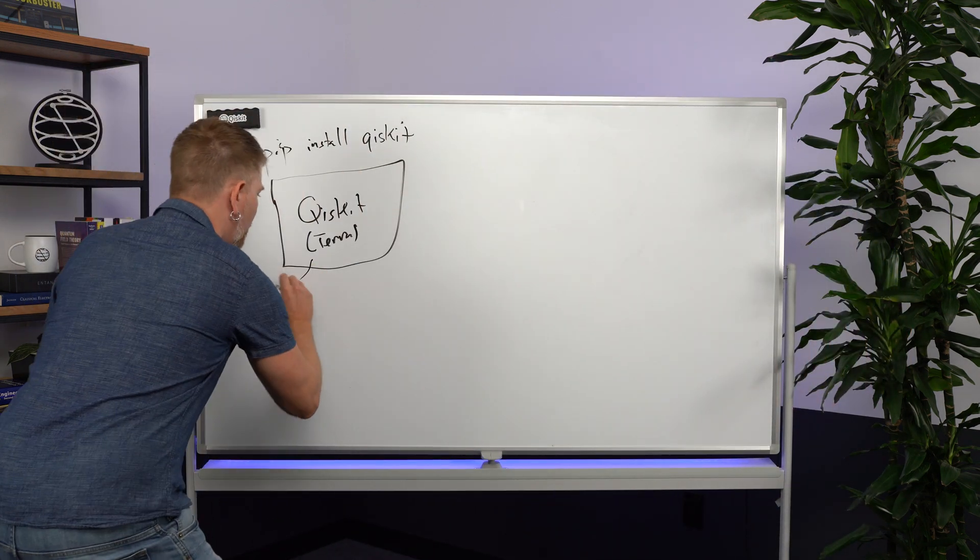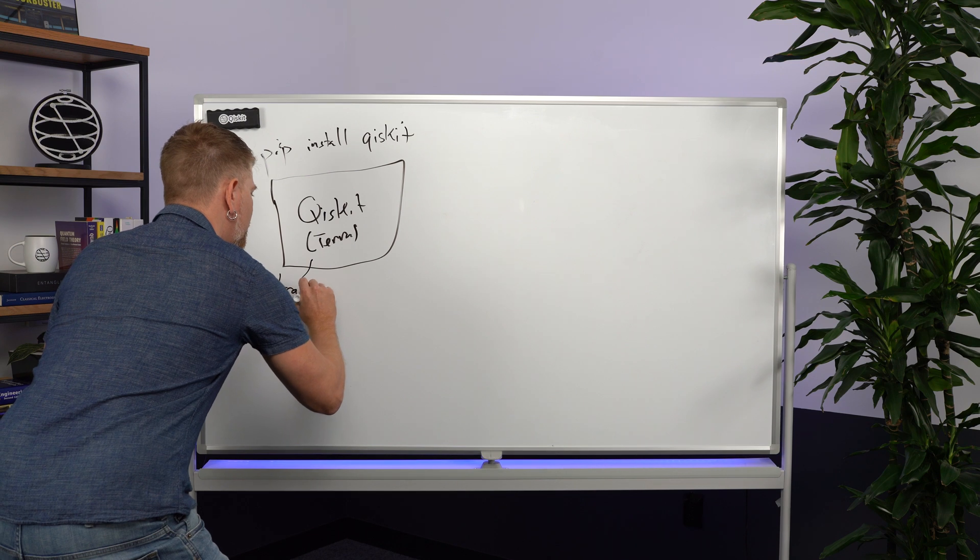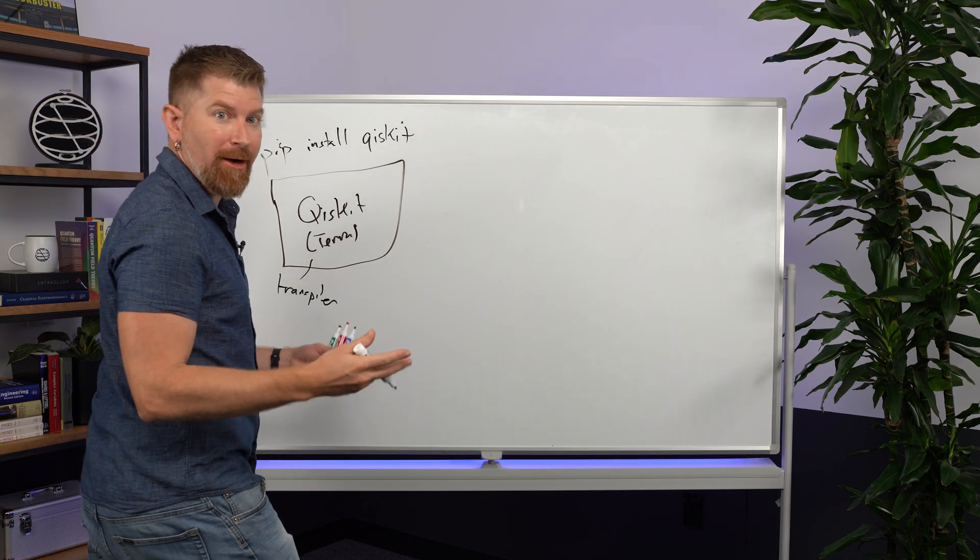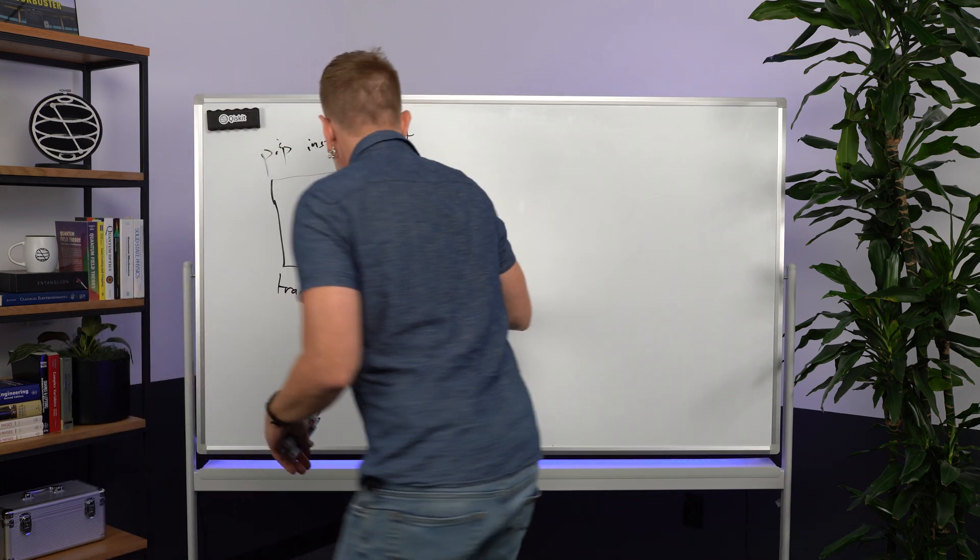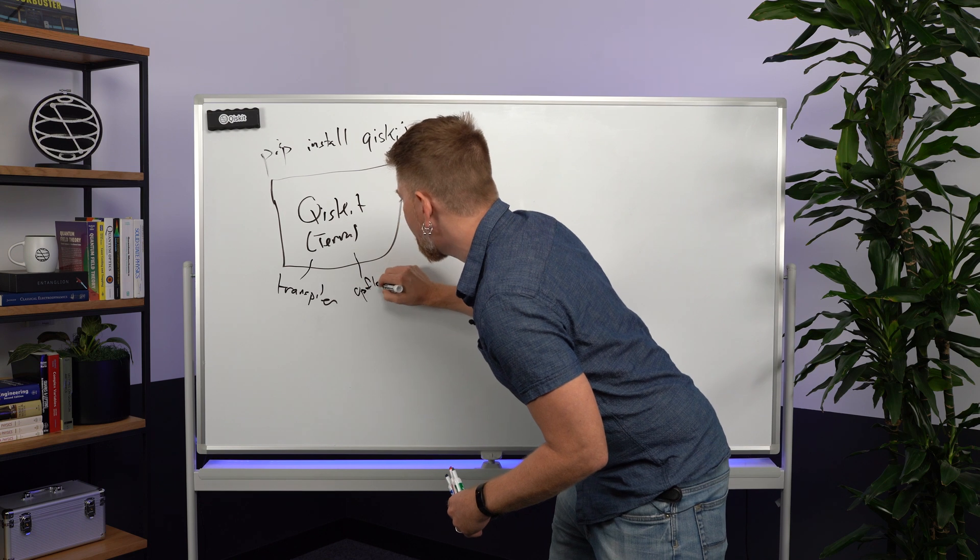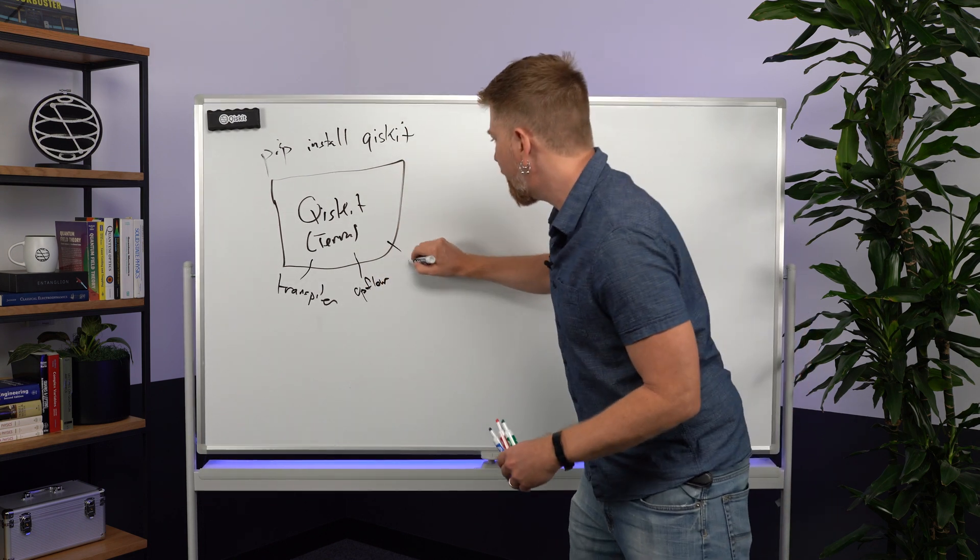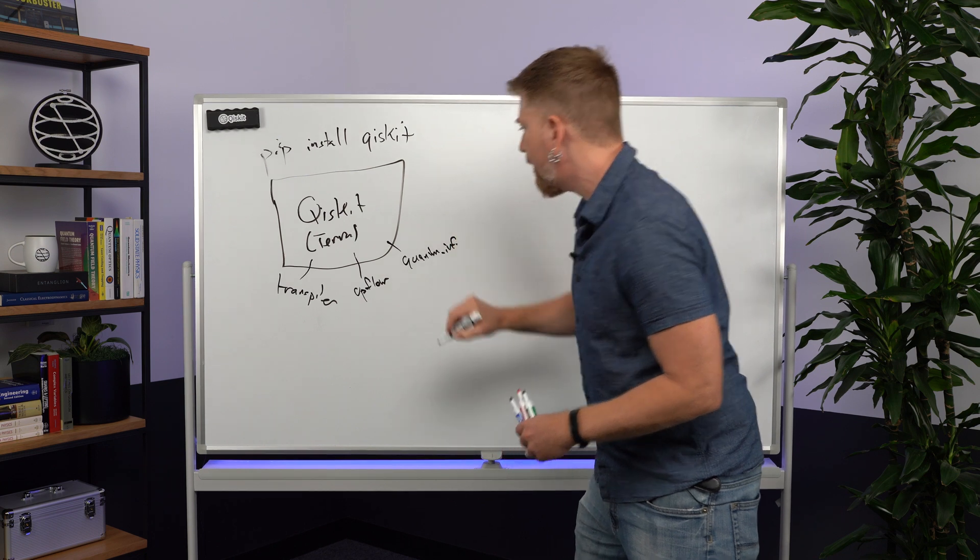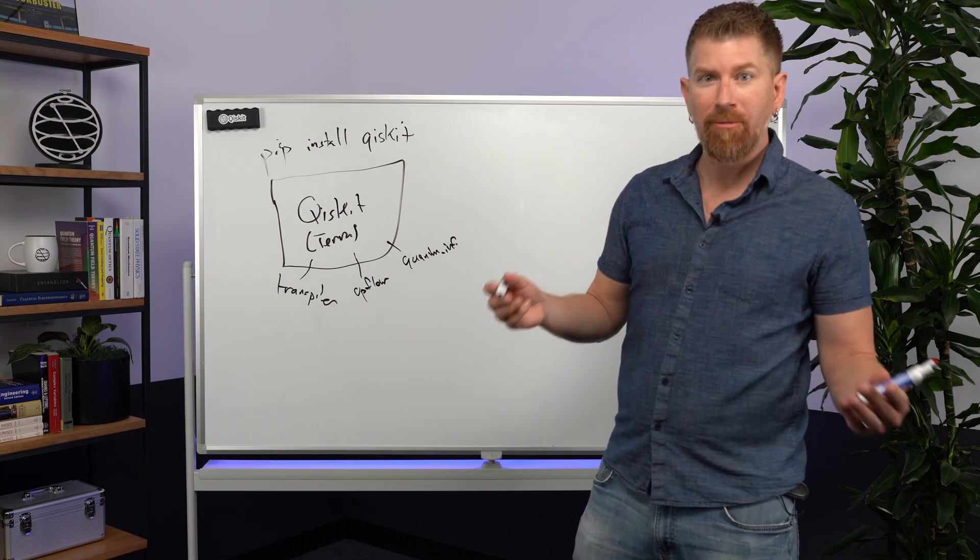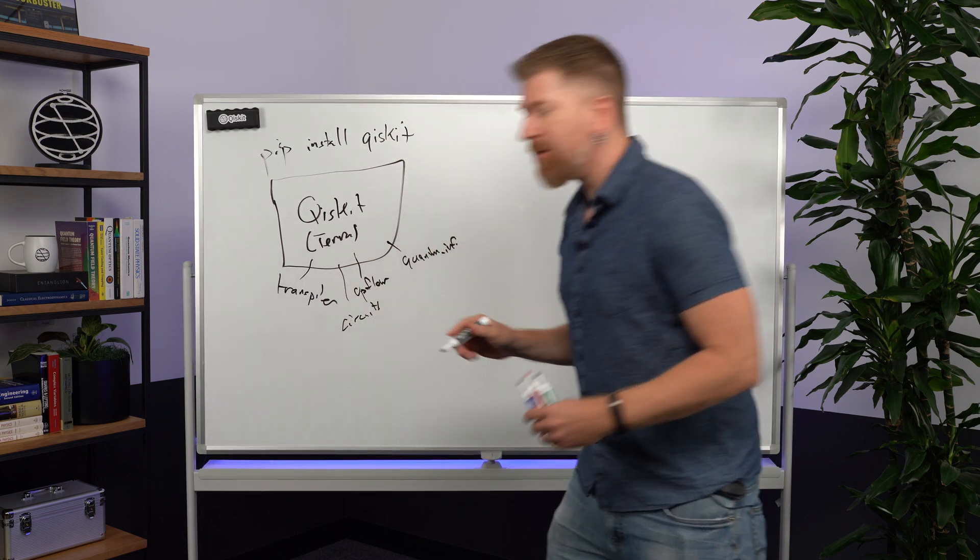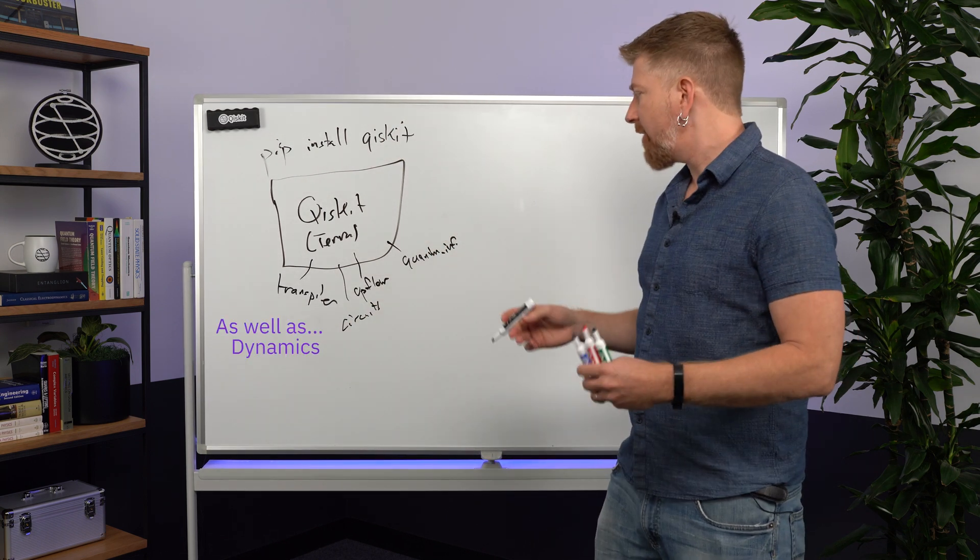So for example, things you might need are the transpiler that will convert an abstract circuit to a circuit that can run on your actual quantum hardware. You have other things such as OpFlow which are used to generate circuits from operators. You have things such as QuantumInfo which are used to look at operators and see what you have. Of course, you have things like circuits, which is your base class for circuits and registers and the like.